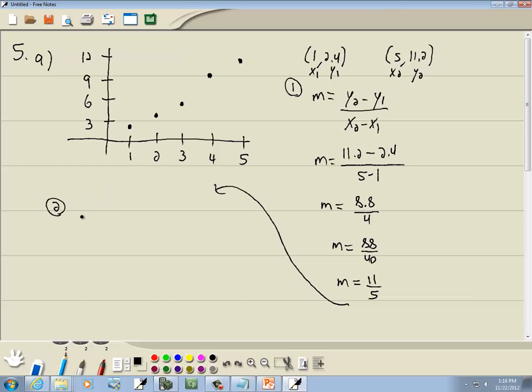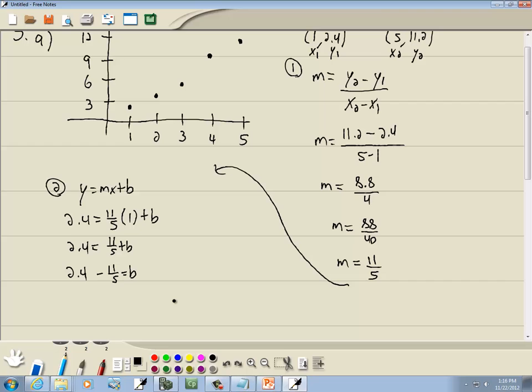So remember our second step. Into the equation y equals mx plus b. Plug in one of the points for x and y. And I'll choose the first one. Put that in for x. Put that in for y. So I got 2.4 equals. m we said was 11 fifths times 1 plus b. So 11 fifths times 1 is 11 fifths plus b. Take that over to the other side. 2.4 minus 11 fifths equals b.